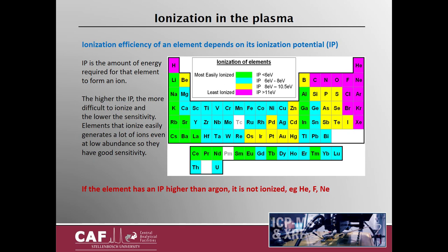The ionization efficiency of an element depends on its ionization potential — the amount of energy required for that element to form an ion. The higher the ionization potential, the more difficult it is to ionize and the lower the sensitivity. Elements that ionize easily generate a lot of ions even at low abundance, so they will have very good sensitivity. If the element has an ionization potential higher than argon, it is not ionized in the argon plasma — for example, helium, fluorine, and neon.